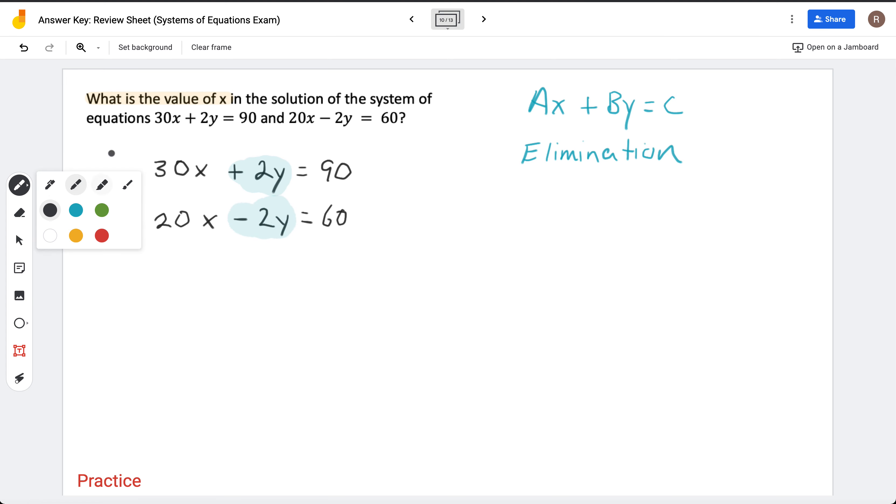So if I combine these equations, what happens? Let's see what happens. 30x plus 20x is 50x. This is positive, so I added 30x plus 20x is 50x. 2y and negative 2y, we can combine those. And because they're opposite signs, they cancel out.